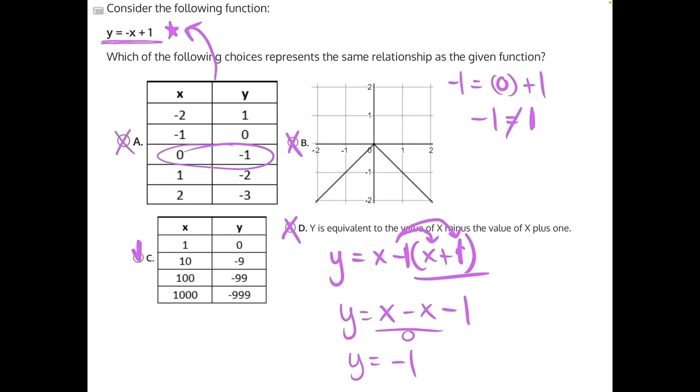But I'll still show you why these table values match our original function. If we were to plug in these values, let's start with 1 and 0. We would have 0 is equal to negative 1 plus 1. When we distribute that negative into the parentheses, negative 1 plus 1 will give us 0, so that will match.